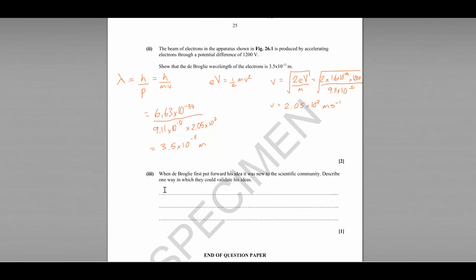And the final question here is a sort of a how science works question. When de Broglie first put forward his idea, it was new to the scientific community. Describe one way in which he could validate his ideas. Well, the answer here is that he could share his ideas via peer review to allow other scientists to replicate his experiments.